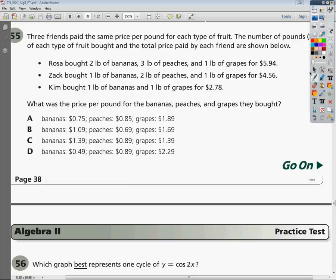So the first one, Rosa bought 2 pounds of bananas, so I'm going to put my 2 here. 3 pounds of peaches, 1 pound of grapes, and she paid $5.94. Zach bought 1 pound of bananas, 2 pounds of peaches, and 1 pound of grapes for $4.56.